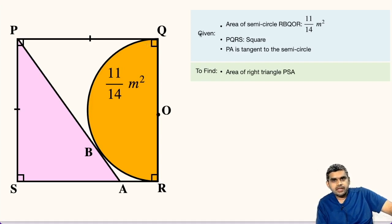In the figure shown, we have a square PQRS and we have a semicircle whose area is given as 11 by 14 meter square. Also PA is tangent to this semicircle at point B and we are asked to find the area of right triangle PSA.